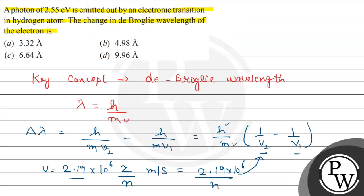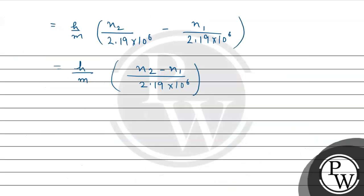To find N1 and N2, we use the given photon energy of 2.55 electron volt to determine the electronic transition.